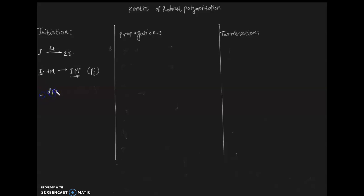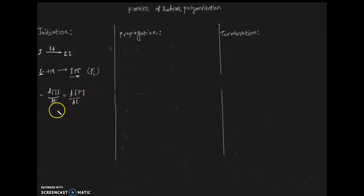The rate of decrease of the initiator concentration equals the rate of polymer radical formation, which is two times F times our dissociation constant times our initiator concentration. The term F is the efficiency, meaning not all initiator radicals react with the monomer.